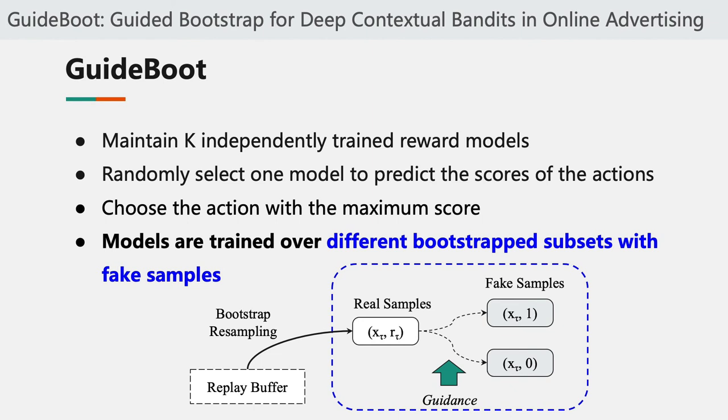Particularly, every fake sample is generated by randomly changing the reward signal of a real sample, and the probability of generating such a fake sample is in proportion to the predictive uncertainty of the reward. In this way, unfamiliar contexts and rarely chosen actions can have a chance to be explored.